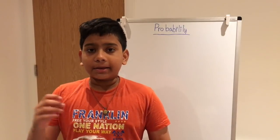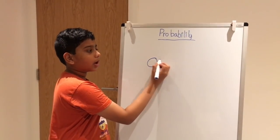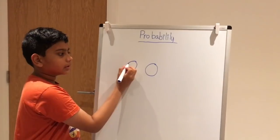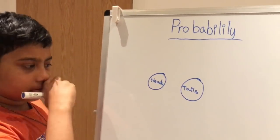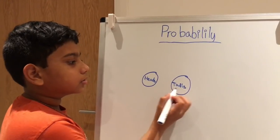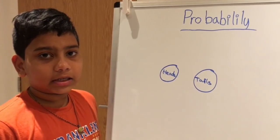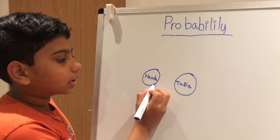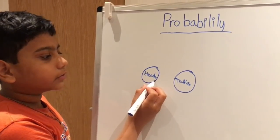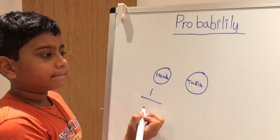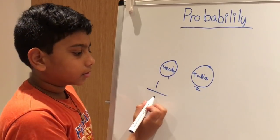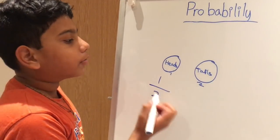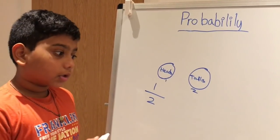Probability is how likely something happens. For example, you have one coin — one side of the coin is heads, another side is tails. You want to find the probability, the likelihood, to get a head. So you write one over two, since there are two sides. The probability to get heads is one over two.